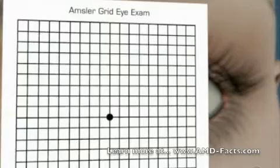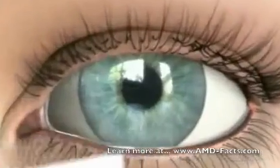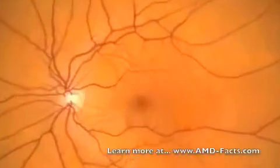An Amsler grid is a simple at-home test used to monitor vision. This test is used to assess the macula.